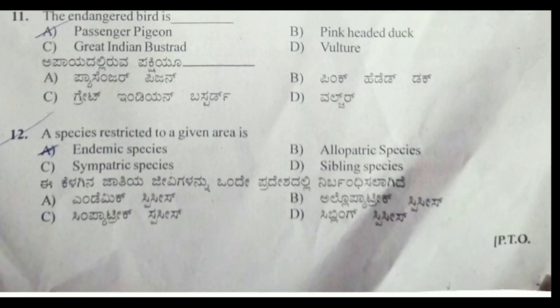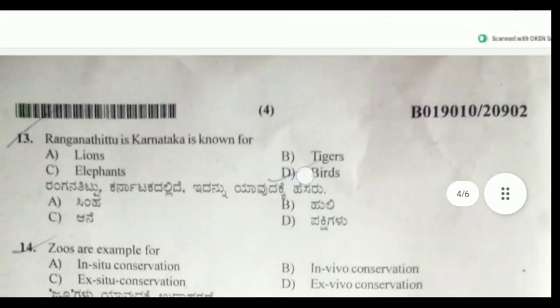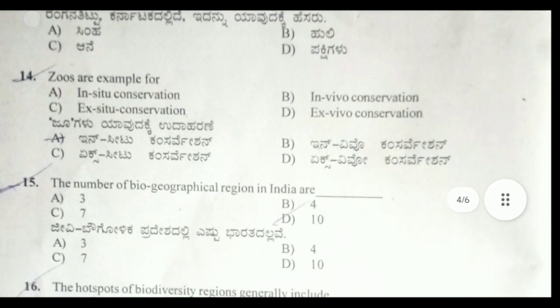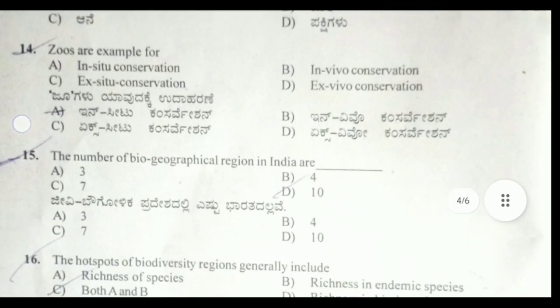Twelfth question: a species restricted to a given area is an endemic species. Option A is the correct answer. Ranganathittu in Karnataka is known for birds.